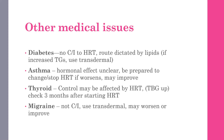Other medical issues: diabetes is not a contraindication to HRT — route is dictated by lipid levels; if triglycerides are increased, use transdermal route. Asthma: hormonal effect is unclear; be prepared to change or stop HRT if it worsens due to underlying pulmonary embolism risk. Thyroid: thyroid binding globulin rises with HRT, so check thyroid function three months after starting. Migraine: not contraindicated, but use transdermal route — it may worsen or actually improve.